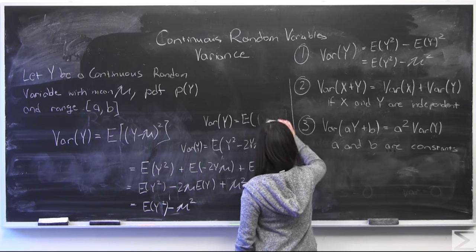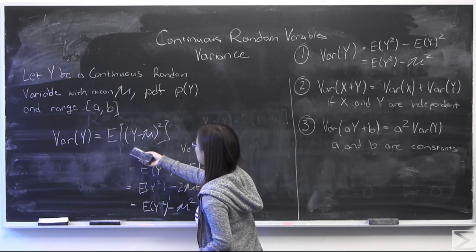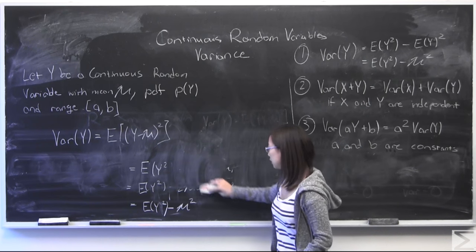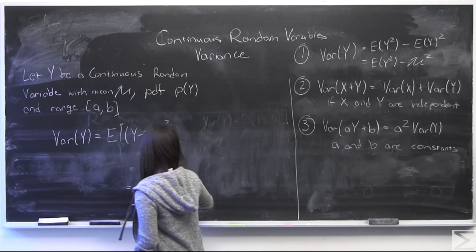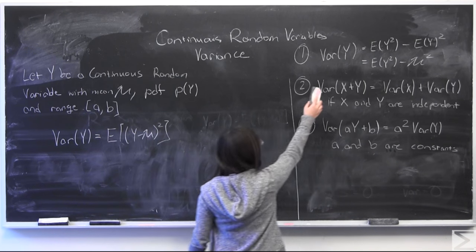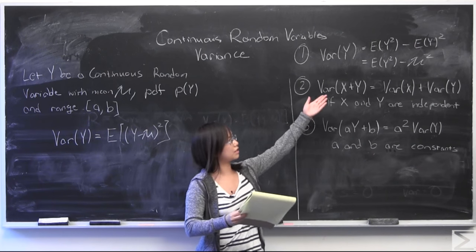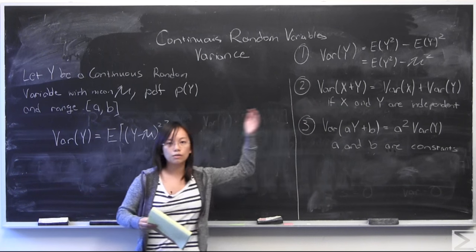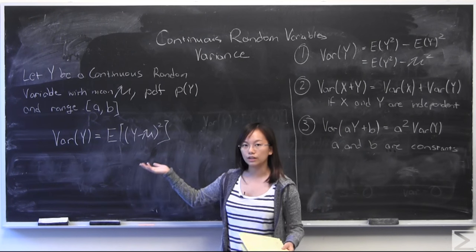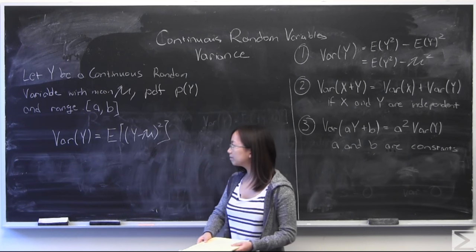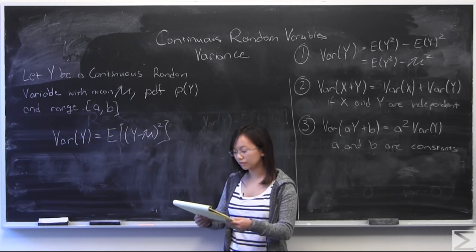This is very helpful because calculating variance through just the definition alone can sometimes be a little gritty — not the easiest thing to do. If you use number one, all you really have to worry about is the expectation value of y squared, and you can use the same method we used for calculating expectation value before.